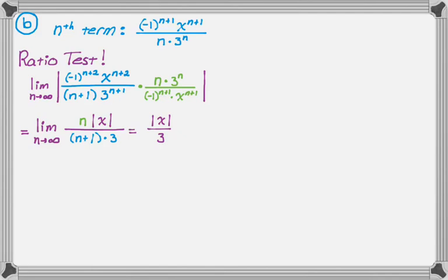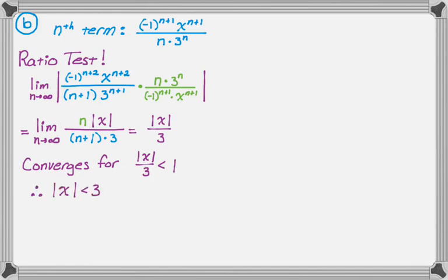The series converges absolutely whenever this is less than one — so it converges for absolute value of x over three less than one, which is equivalent to absolute value of x less than three, or the open interval from negative three to three. But we have to test the endpoints.